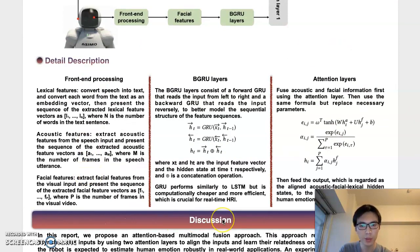In this paper, we propose an attention-based multimodal fusion approach to resolve the problem of asynchronous inputs by using two attention layers to align the inputs and learn their relatedness orderly.